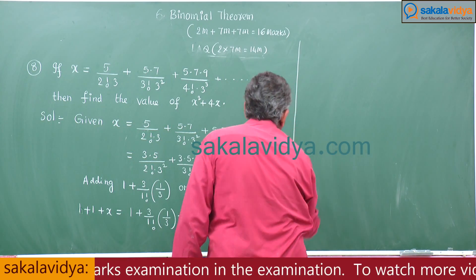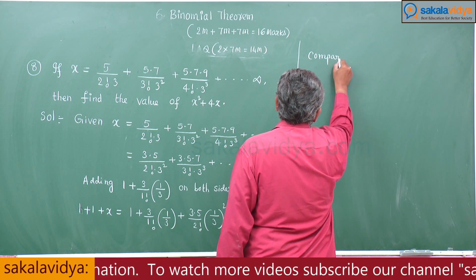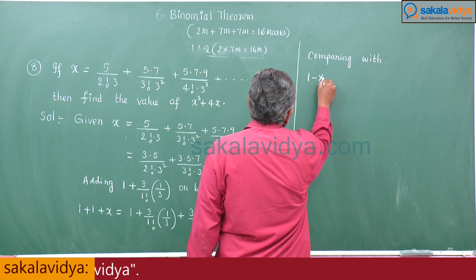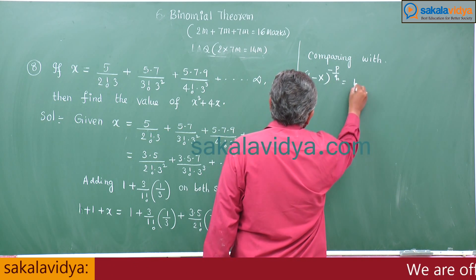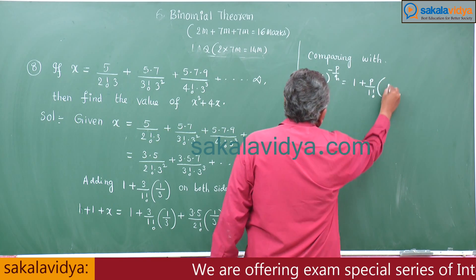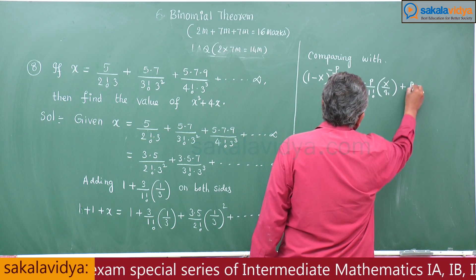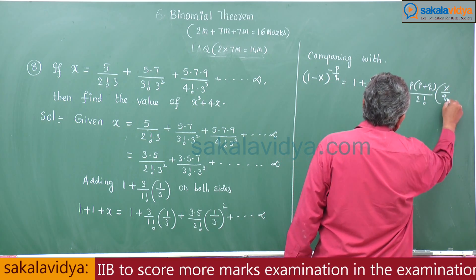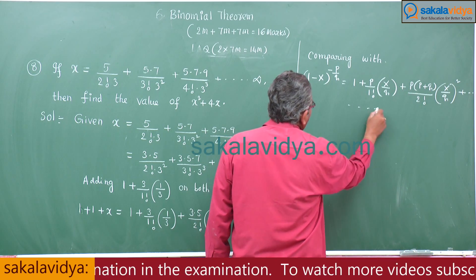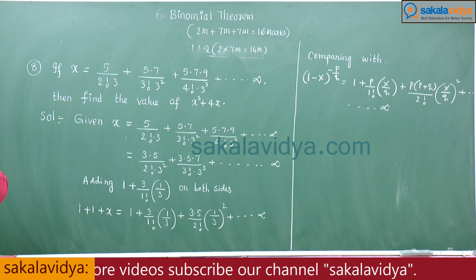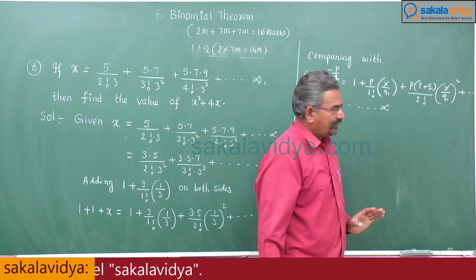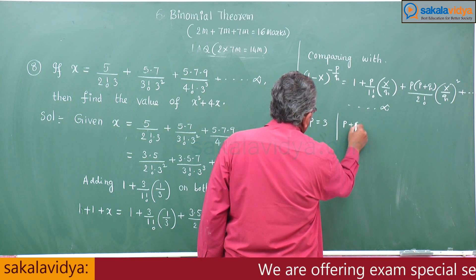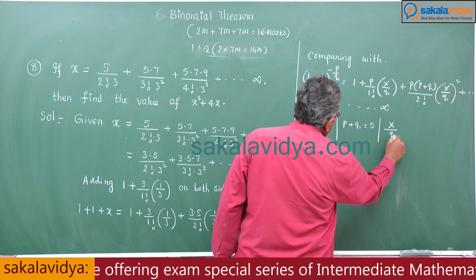So 1 + 1 + x = 1 + 3/(1!) · (1/3) + 3·5/(2!) · (1/3)² + … Three terms are enough for comparison. Comparing with (1 − X)^(−p/q): p = 3, p + q = 5, X/q = 1/3.